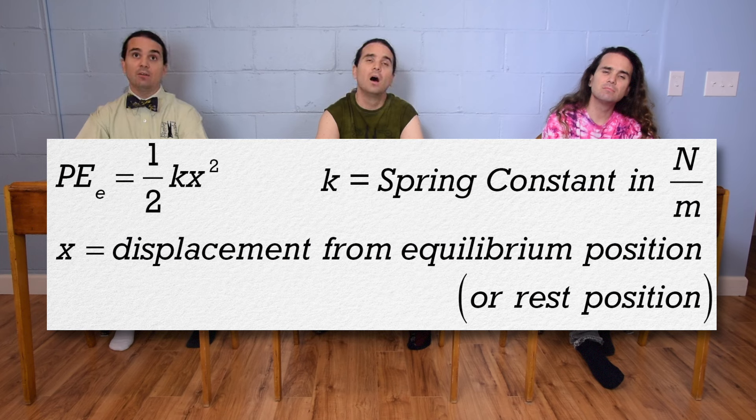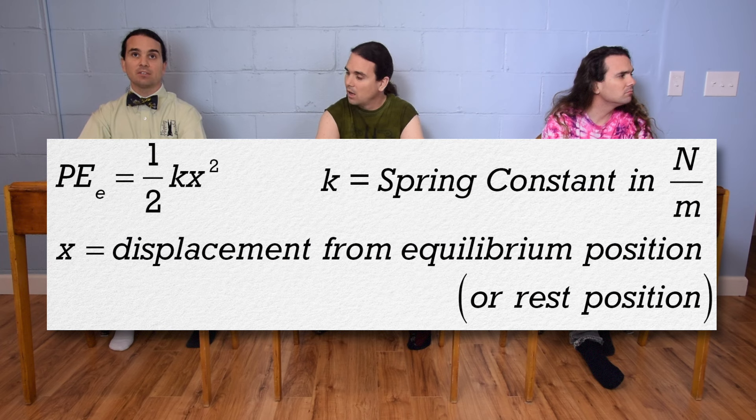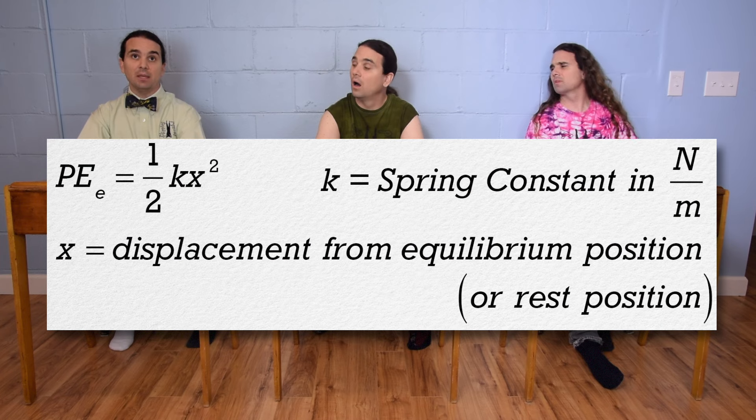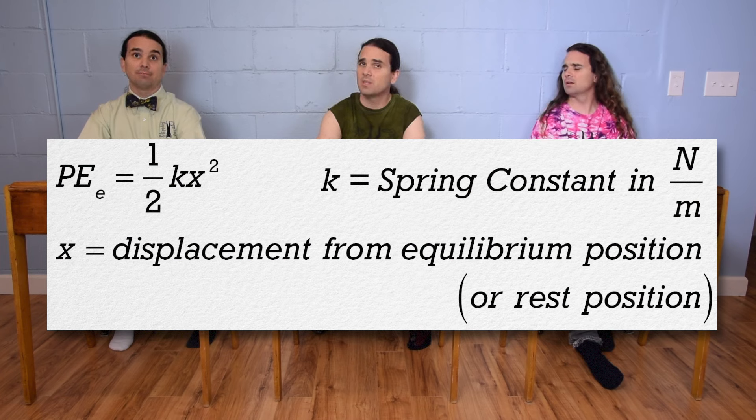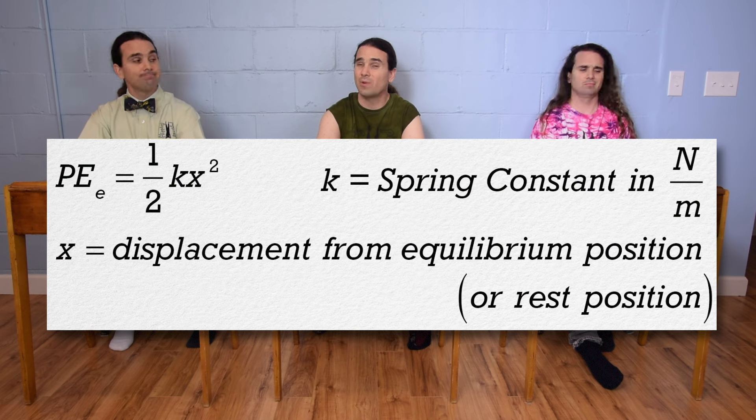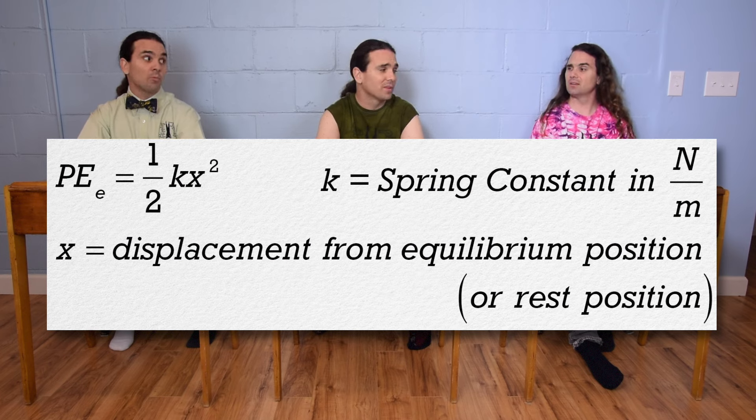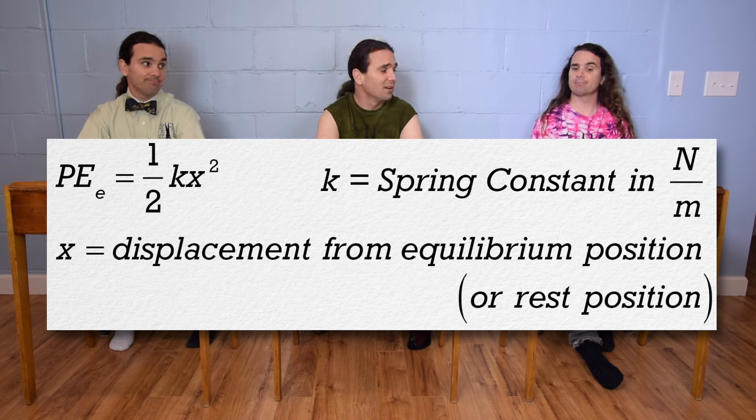Elastic potential energy equals one half k x squared, where k is the spring constant of the spring and usually has dimensions of newtons per meter and x is the displacement from equilibrium position. But sometimes the equilibrium position is called the rest position. How do you guys know all this stuff? We did our homework. Yeah, it helps.